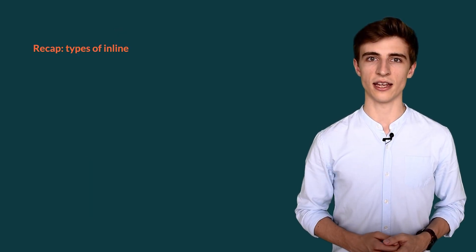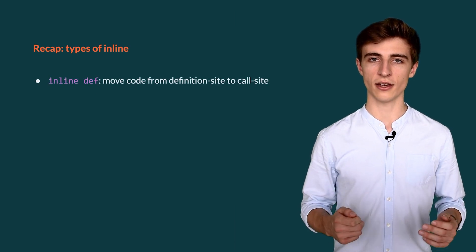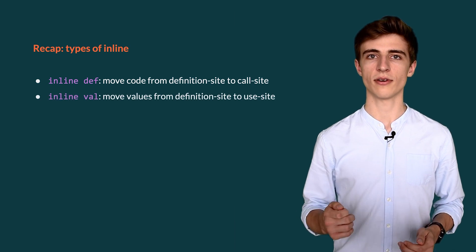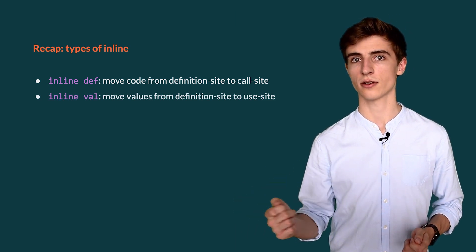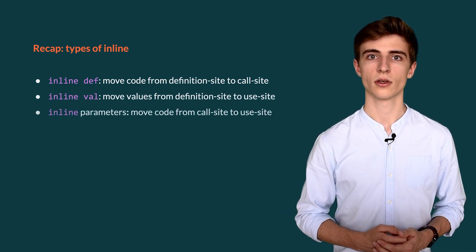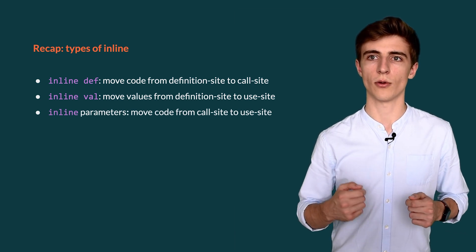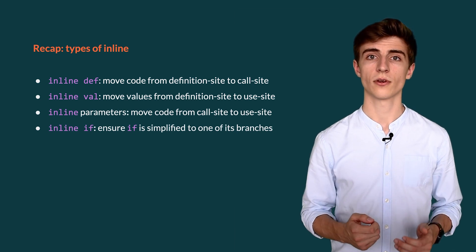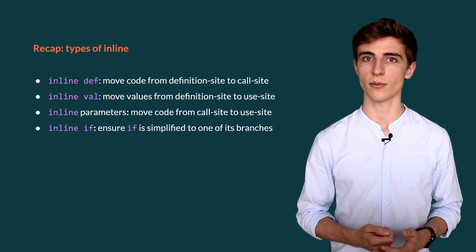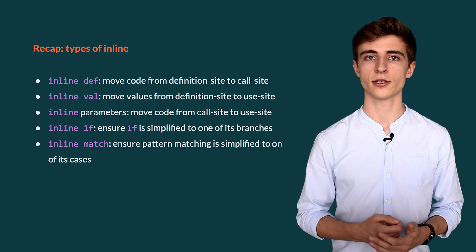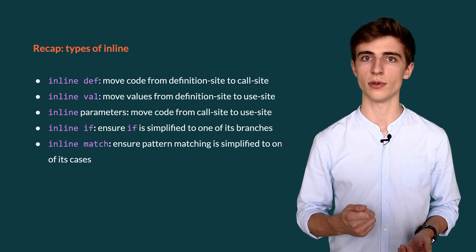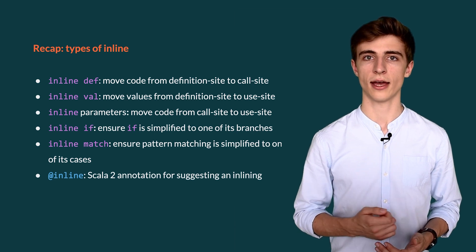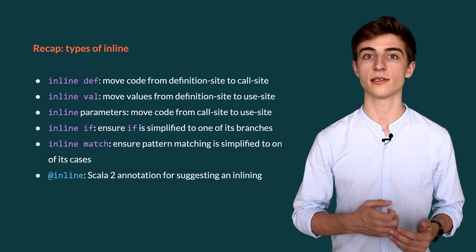Let's recap the types of inline we've seen so far. Inline defs are used to move code from definition sites to use sites. Inline vals are used to move values from definition sites to use sites. Inline parameters move code from an argument into the function where it is used. Inline ifs ensure that an if can be simplified by the compiler, and inline matches ensure that matches can and will be simplified. And remember that @inline is the odd one out — it's the Scala 2 annotation.